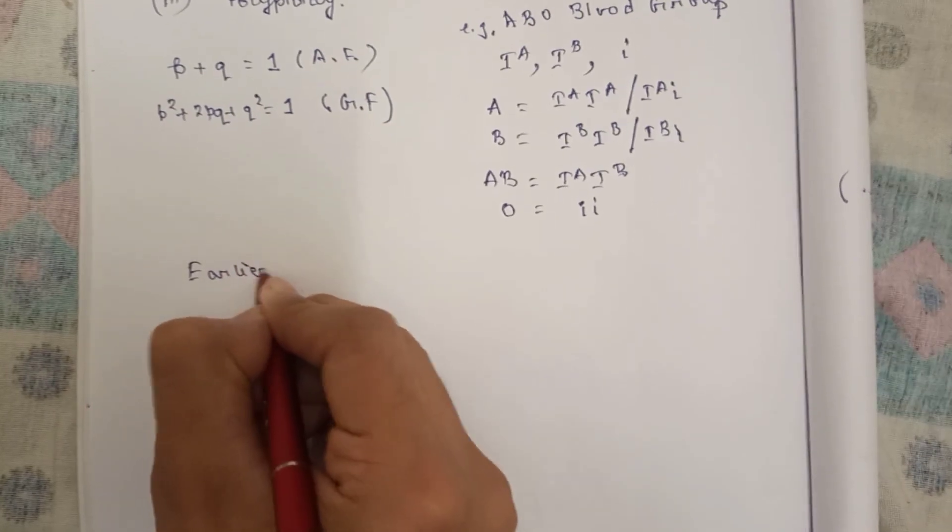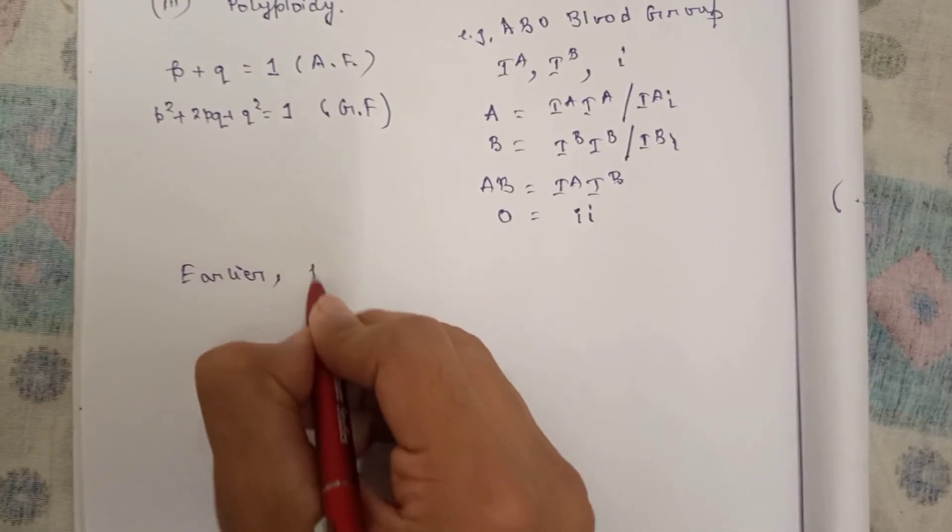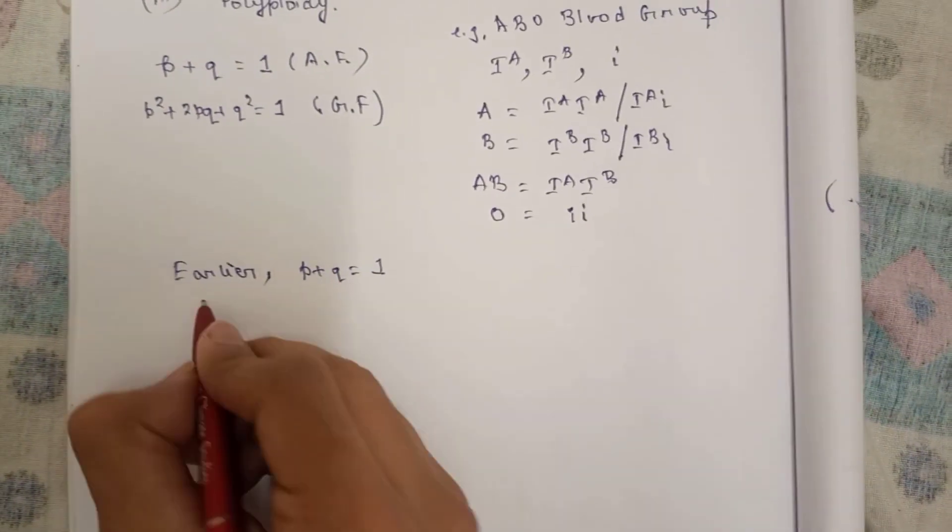Earlier it was two alleles and two frequencies p and q, so we write as p plus q equal to one.